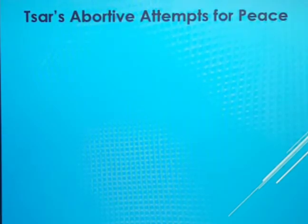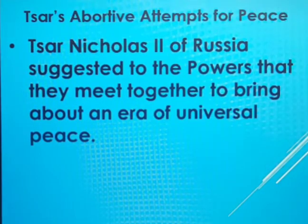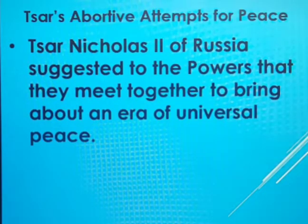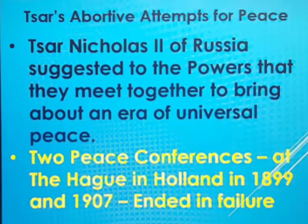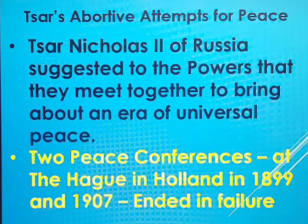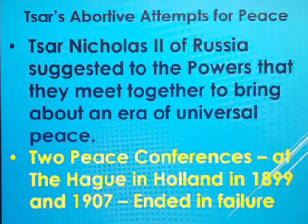Next is the Tsar's attempts for peace. Tsar means the ruler of Russia — Tsar Nicholas II — who suggested to other European powers and leaders to bring universal peace. Other rulers and European powers also accepted the idea of bringing universal peace. In response, two peace conferences were conducted, held in the years 1899 and 1907, both at The Hague, which is in the Netherlands. But these two peace conferences ended in failure.